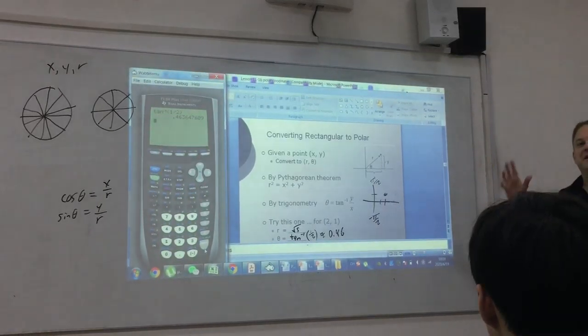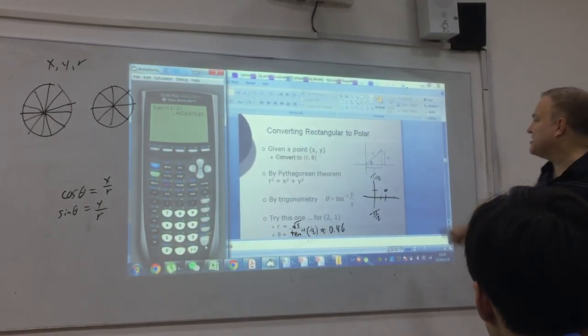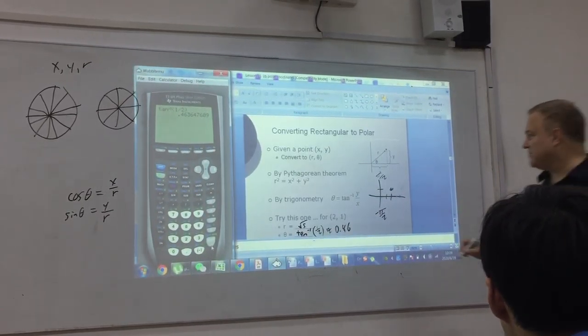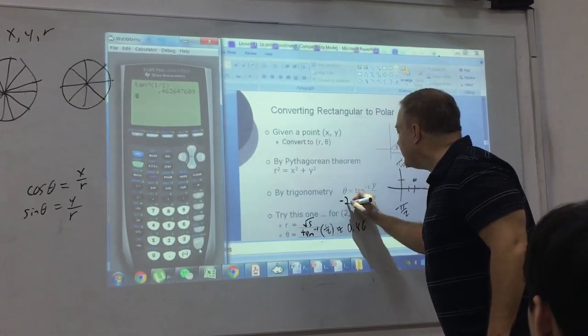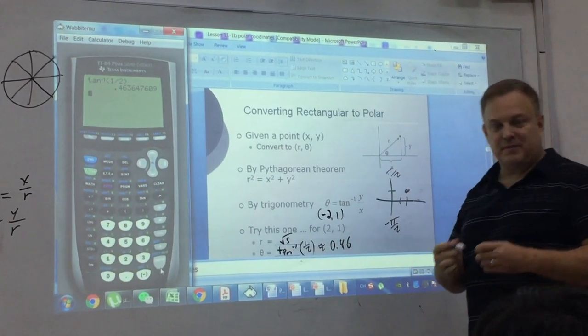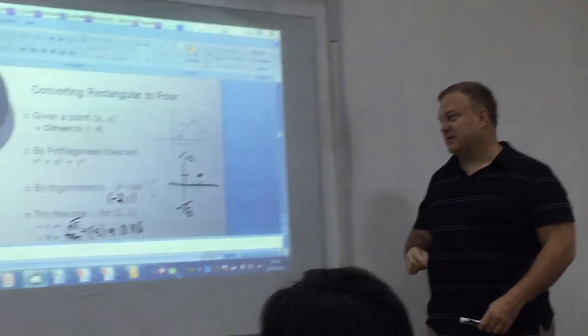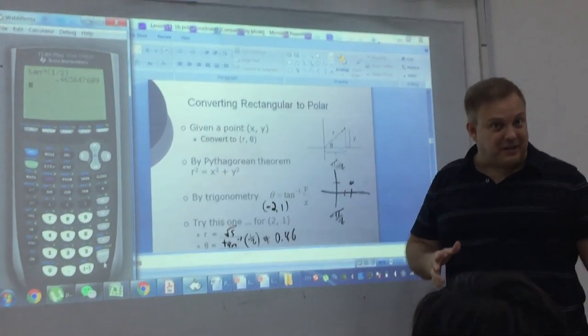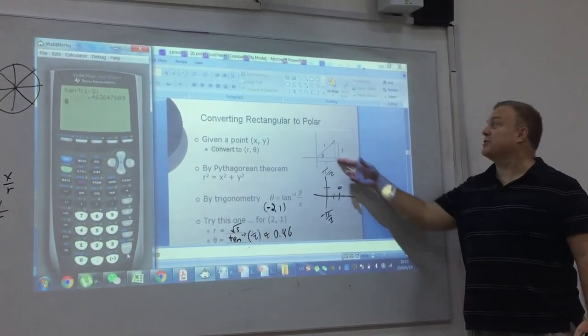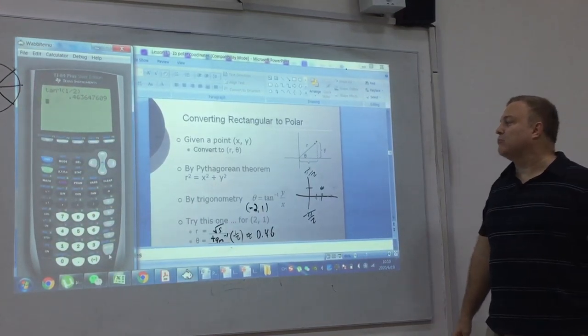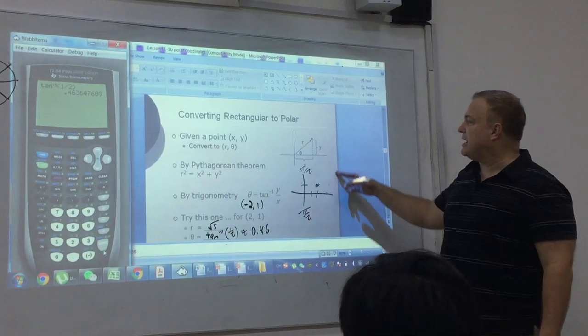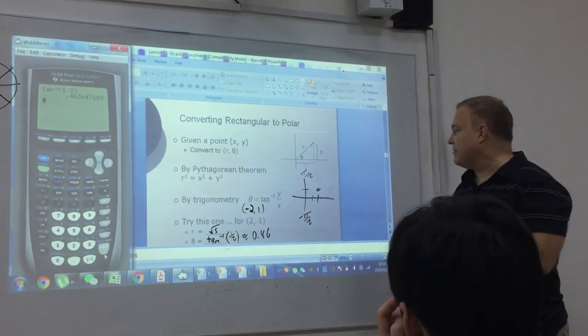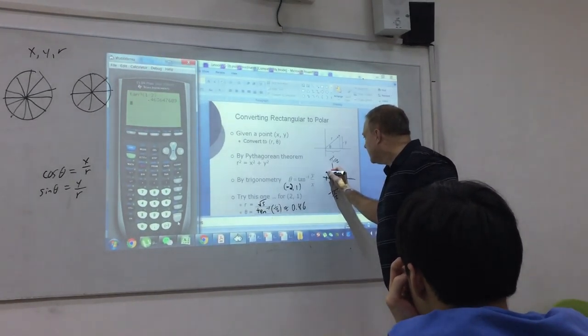Now again, this one was kind of easy because it was in the first quadrant. Let's make a small change and say the point is (-2, 1). Now, I already told you that if you use the inverse tangent on the calculator, the calculator will give you an angle between negative π/2 and positive π/2. However, (-2, 1) is right there.